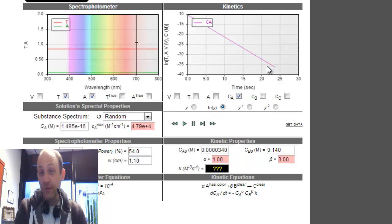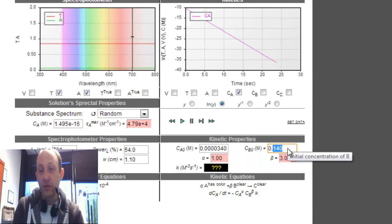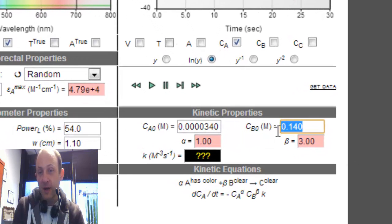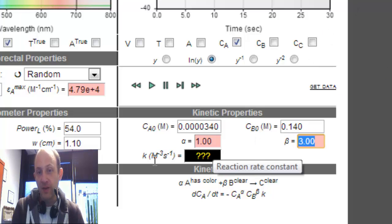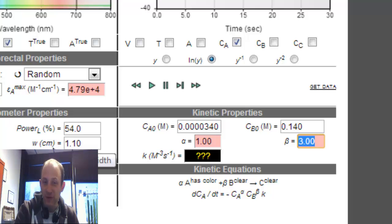But, in this case, I would take this slope, but I would need to divide it by, to get the true rate constant, I need to divide it by 0.14 raised to the third power. And that should give me my true K. So, hopefully that helps. If there's any questions, please find me.